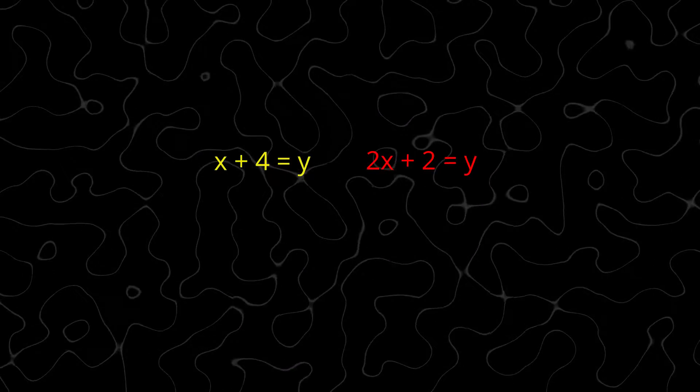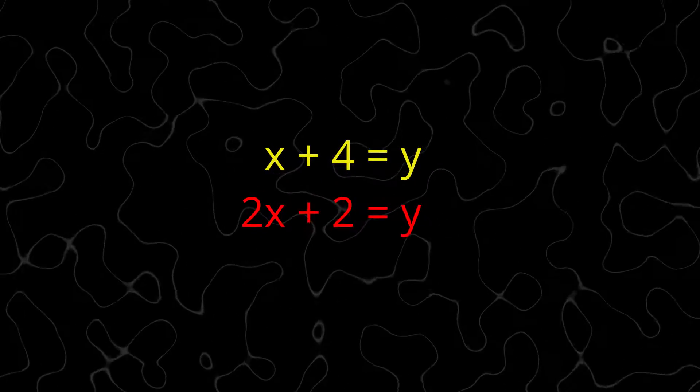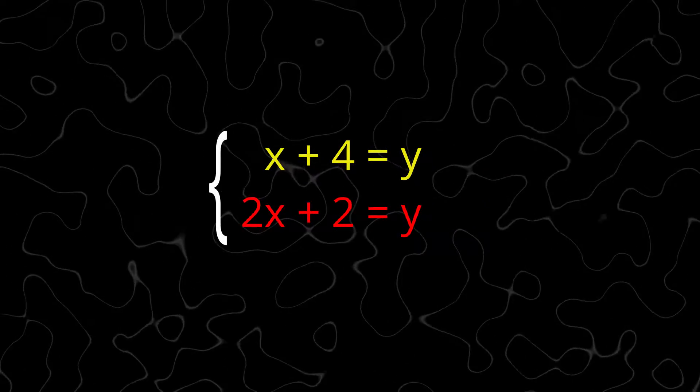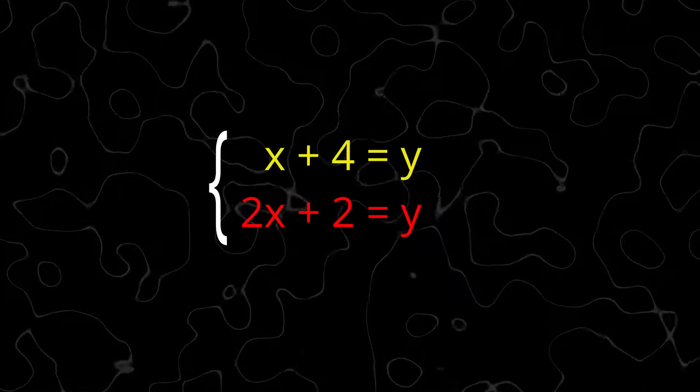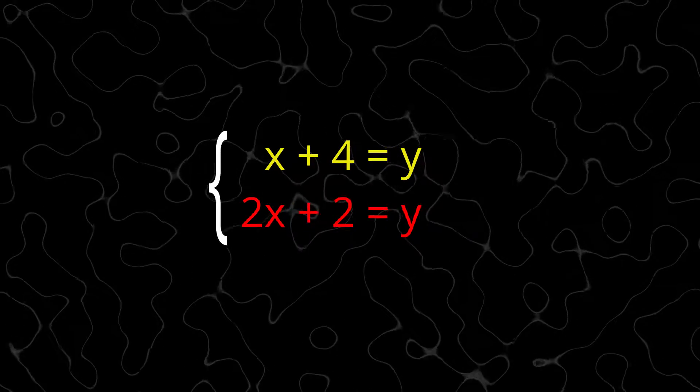When we think about two or more equations as a system of equations, then we are often interested in how many solutions the system has and what those solutions are. This system has just one solution.